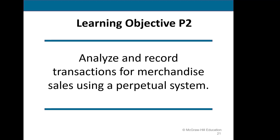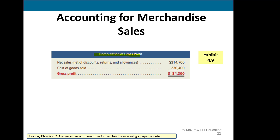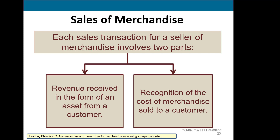Now we want to look at sales transactions. This shows how to compute gross profit: net sales (net of discounts, returns, and allowances) subtract our cost, gives you gross profit. We will have two journal entries whenever we sell merchandise using the perpetual inventory system. One journal entry records the revenue, and the second records our cost of that sale.